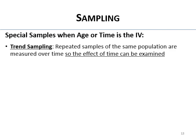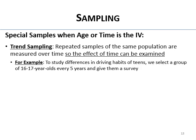There's also trend sampling. This is when repeated samples of the same population are measured over time so the effect of time can be measured. For example, you select a group of 16-to-17-year-olds every five years and give them a survey. They're different 16-to-17-year-olds each time, but it's the same age cohort, and you're looking at trends in that group over time.